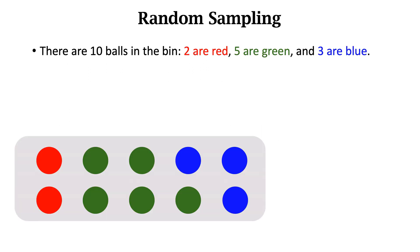Random sampling. Here's an example. There are 10 balls in the bin: 2 are red, 5 are green, and 3 are blue. I close my eyes, I shake the bin, put my hand into the bin, and get the ball out of the bin. What is the color of the ball? I don't know until I open my eyes.